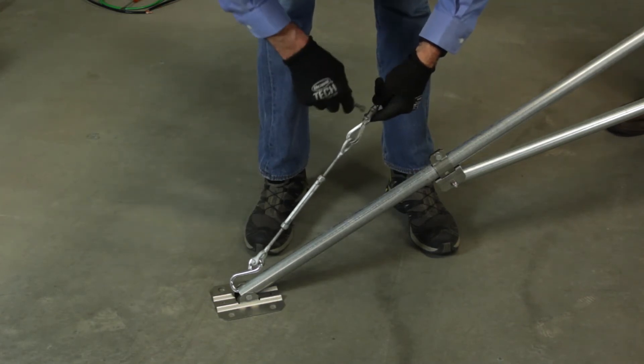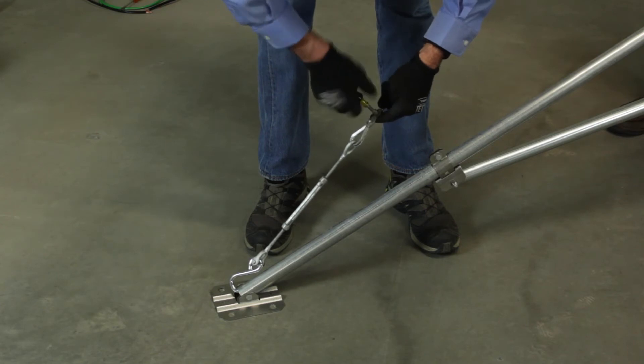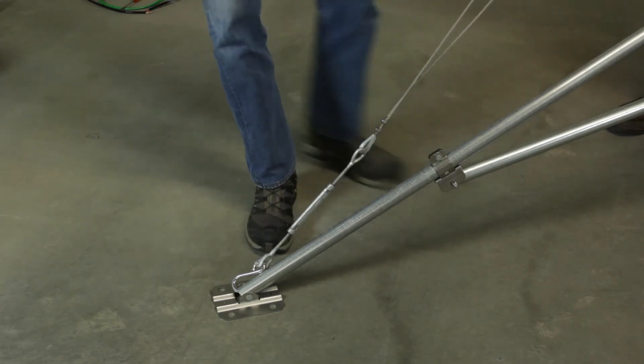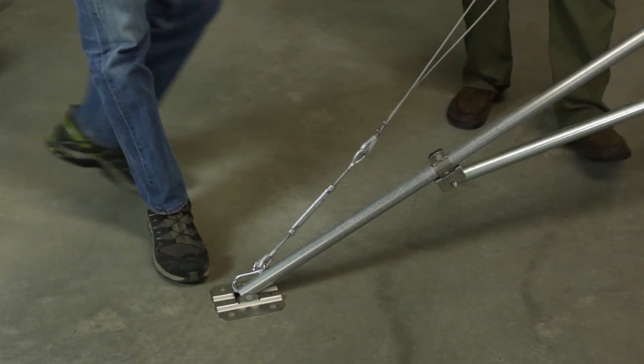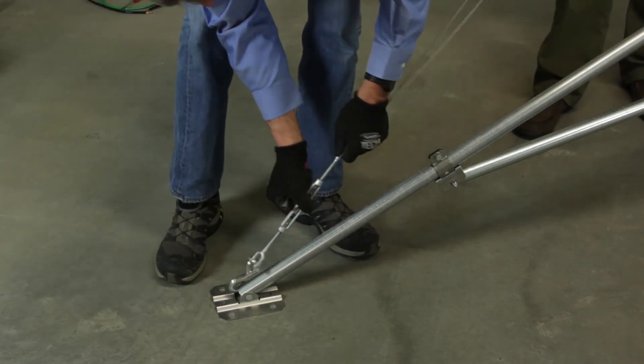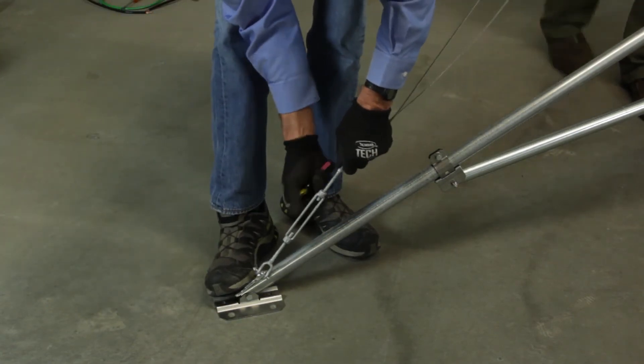Tighten the clamp nuts on each guy wire to prevent the wire from slipping. Tighten the turnbuckles on each guy wire to the desired tension.